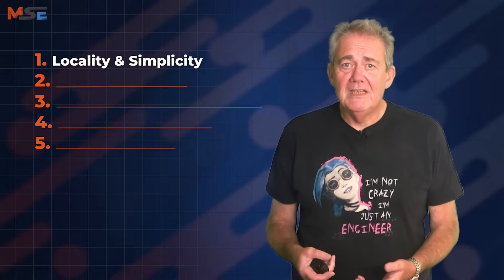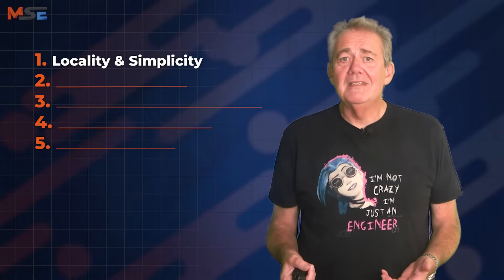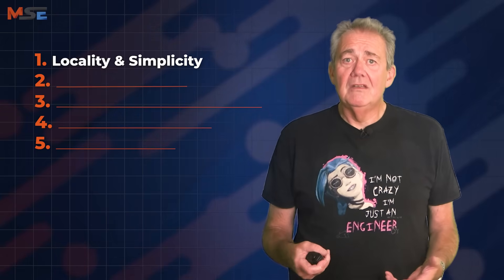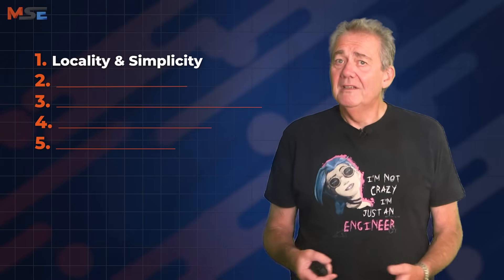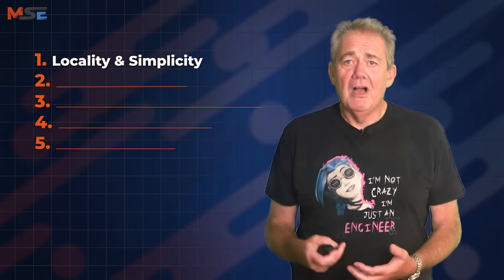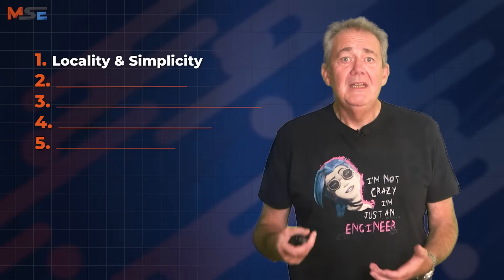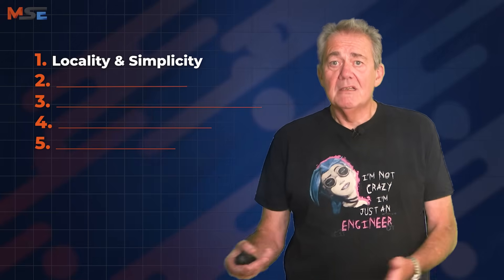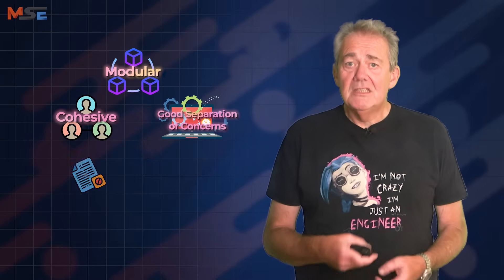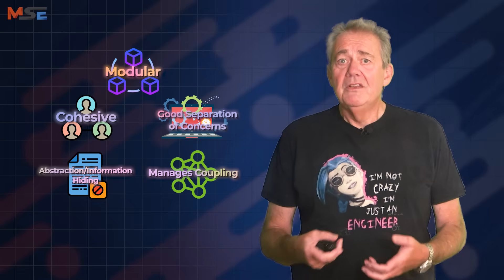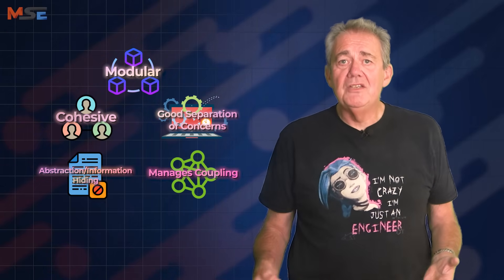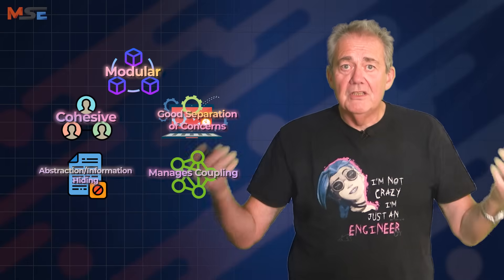The first ideal in Gene's list is locality and simplicity — by which he means make it easy to understand what you think you're changing. If you've followed my work, I would hope that this sounds very familiar. In Modern Software Engineering, I argue that our real enemy isn't bad programmers or lack of discipline — it's complexity. And the only defence we have against complexity is to reduce the amount of system that we need to hold in our heads at any one time. Locality and simplicity are essential engineering tools for reducing cognitive load.